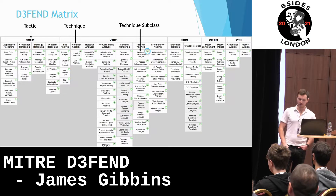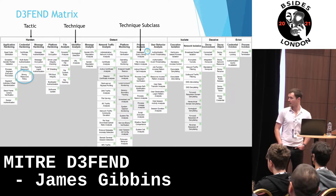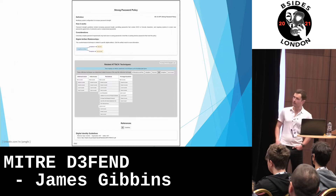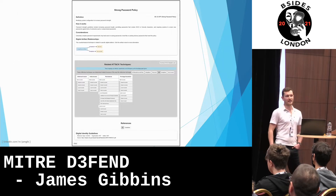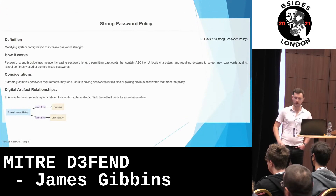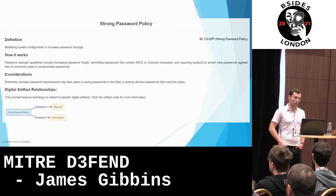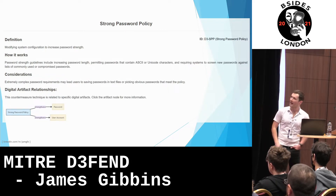To continue our exploration, let's pick one countermeasure and look into it a bit further. I thought strong password policy, because it's easy for me to explain and I'm sure all of you know what a password is. It's still very important to cybersecurity, because that's still how a lot of compromises happen. This is the strong password policy countermeasure page. At the top there's some information, in the middle some stuff to do with the ATT&CK framework, and at the bottom, references. The information section has a definition of what it is, how it works, and considerations — things you can think about before implementing it.